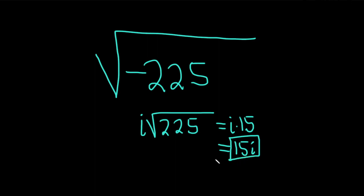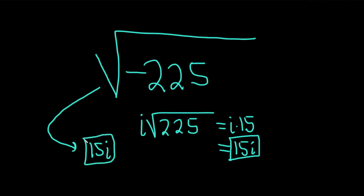A better way to do this is as follows. Whenever you see something like this and you have a negative, you automatically know you're going to have an i. And then the square root of 225 — well, that's 15. So you just know the answer is 15i simply by looking at it. The negative in the root tells you it's going to be an i, and the square root of 225 is 15. Boom, super fast. Eventually you want to be able to do it this way because the problems do get more complicated.